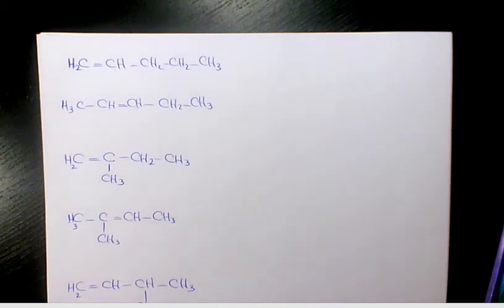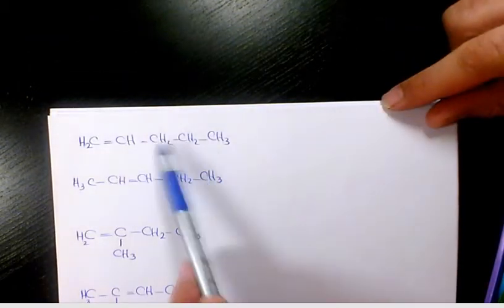What's up guys, this is Masi. Welcome to another video. In this video I want to show you how to name alkenes. So I have some examples here for alkenes. The first one, as you see here, we have five carbons in here.